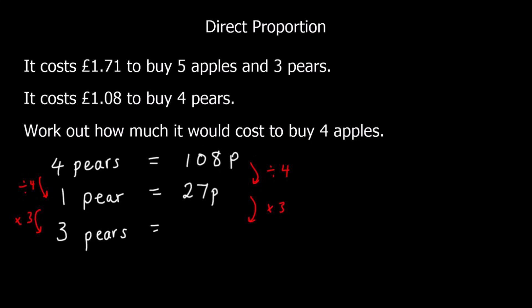So 27 times 3, 20 times 3 is 60. 7 times 3 is 21. 60 plus 21 is 81p. So 3 pears are 81p.